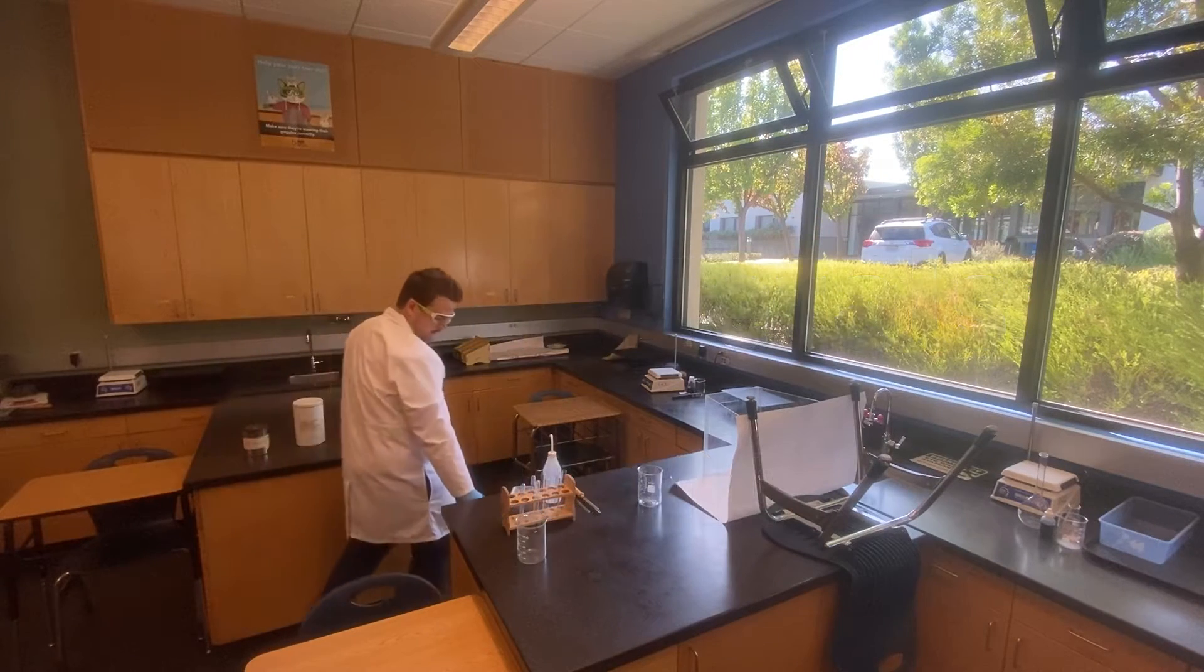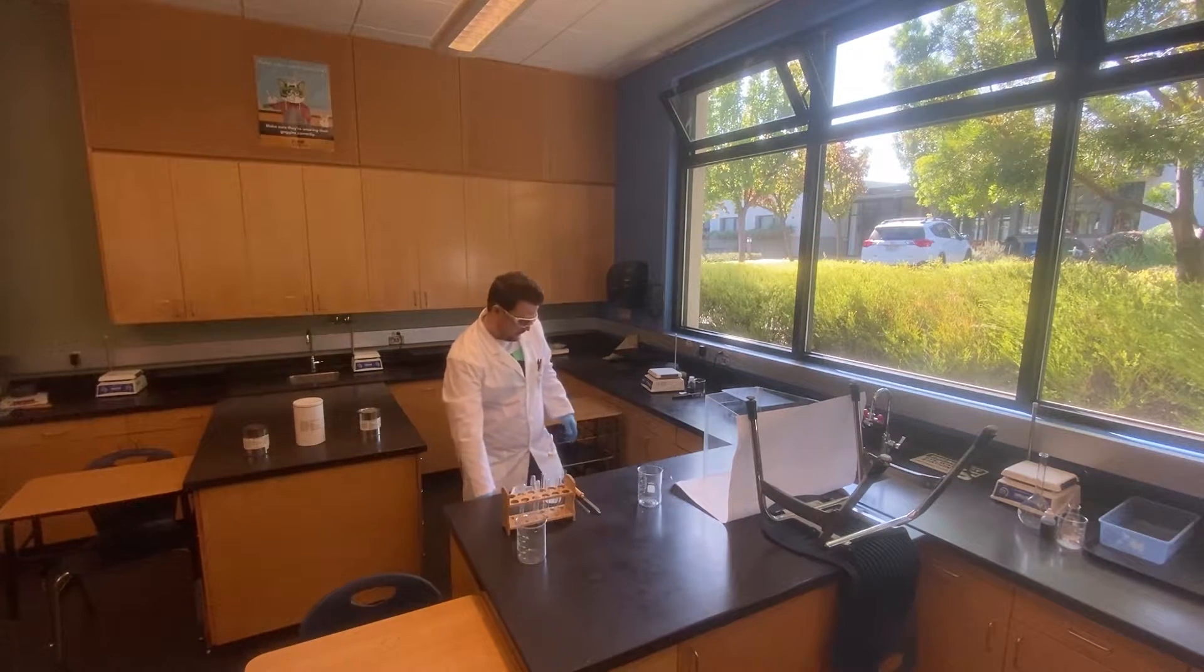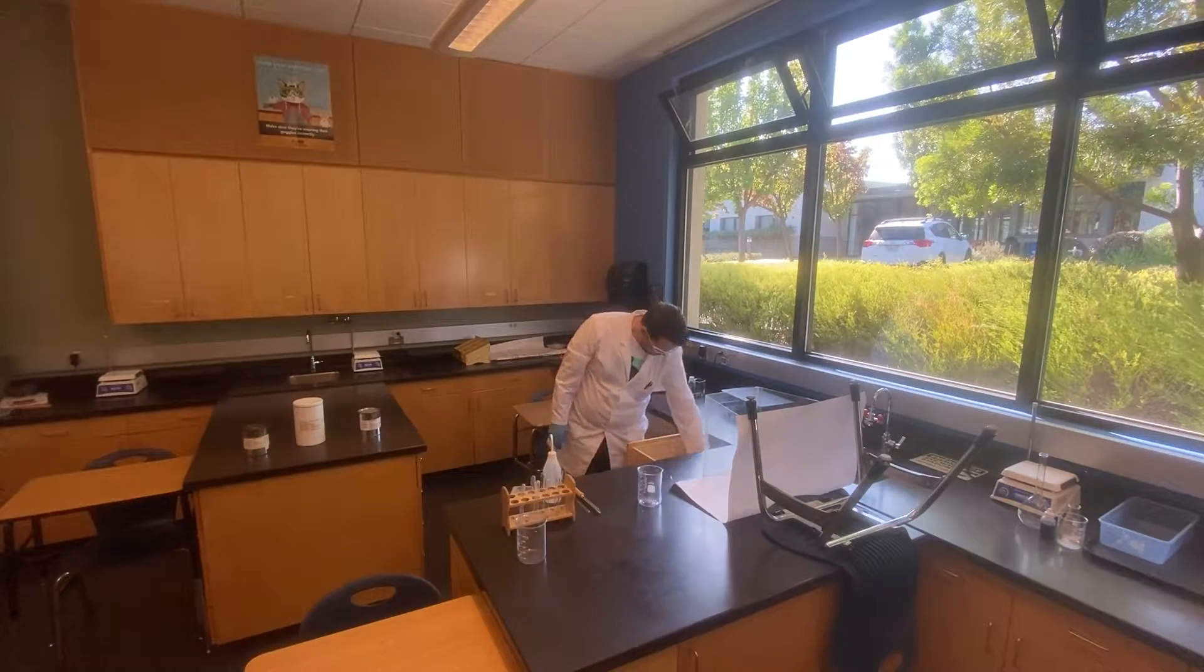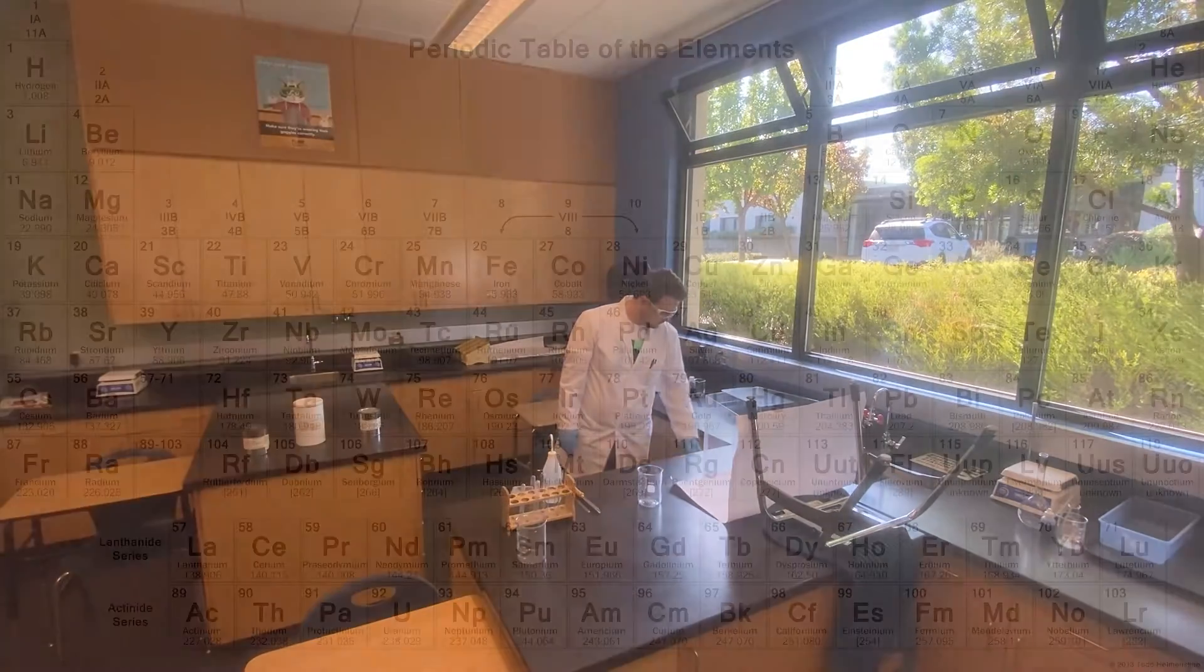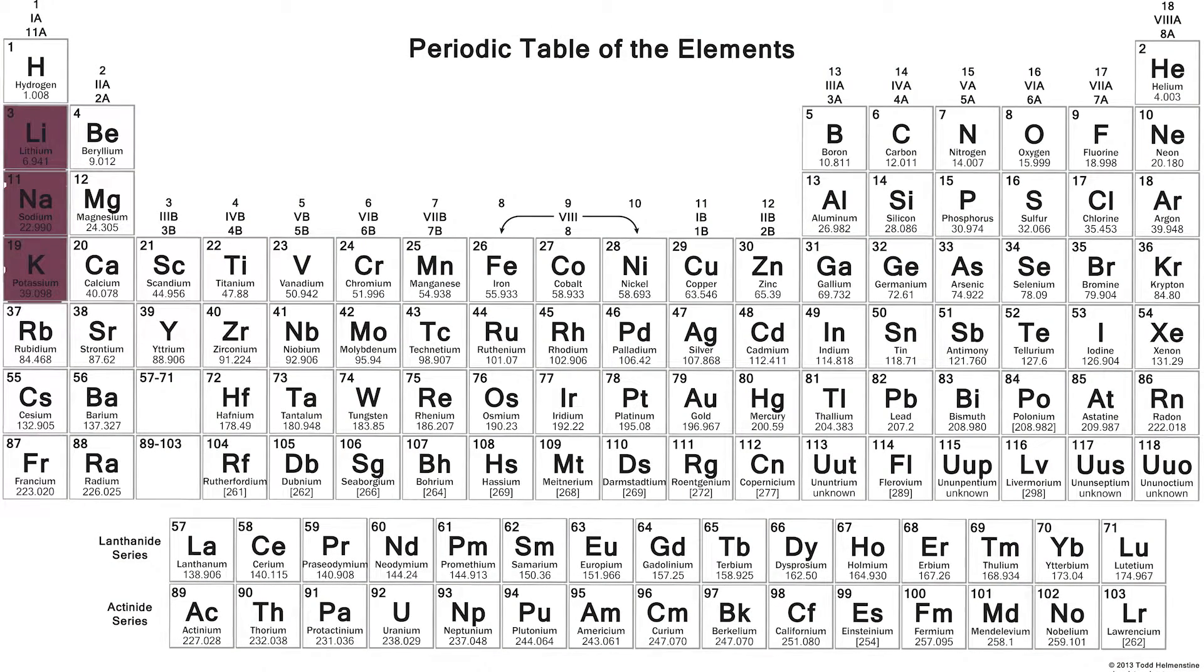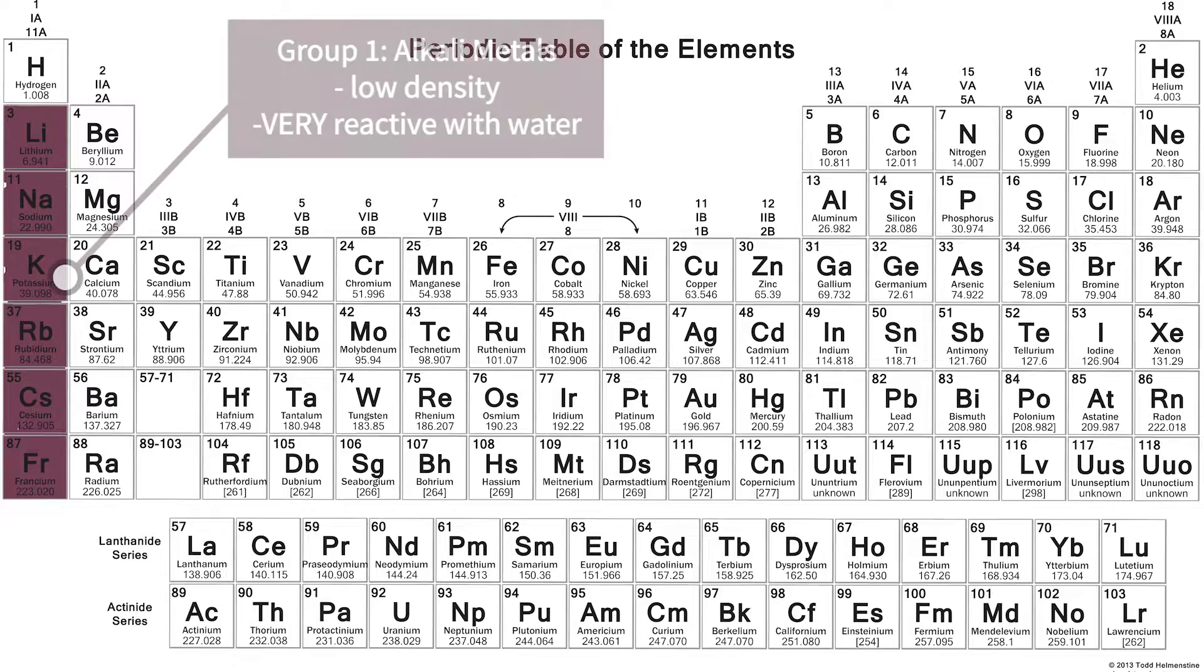We are back with some more classic chemistry demos today. Before we jump into the action, let's talk about the three elements that we're going to see in the first video. In this video, we're going to be investigating lithium, sodium, and potassium. These three elements belong to group one on the periodic table, which are called the alkali metals. Recall the elements in the same group share similar chemical properties.